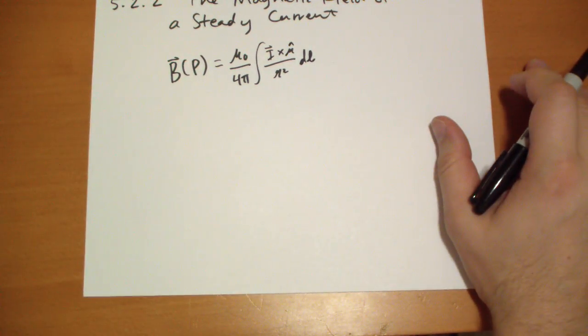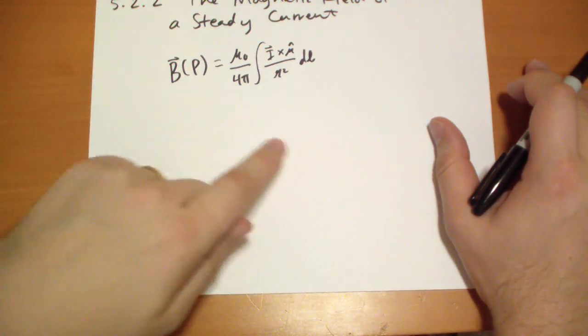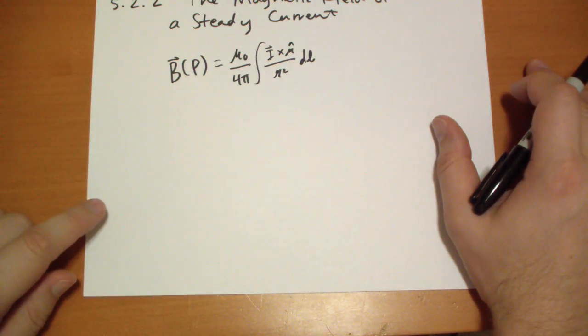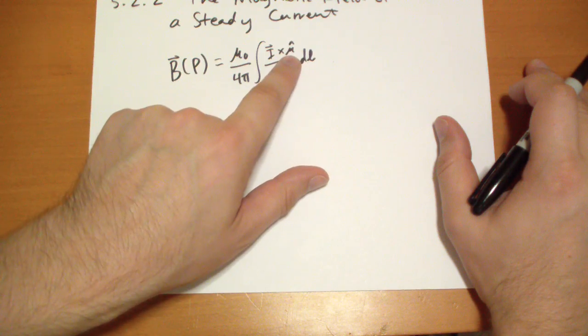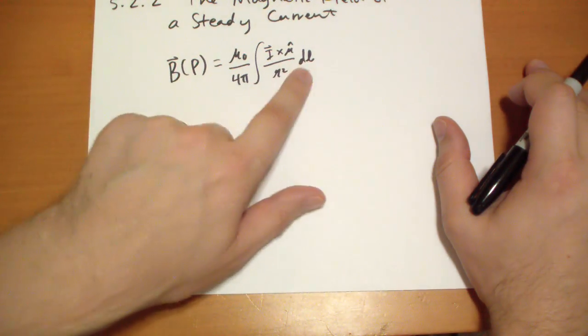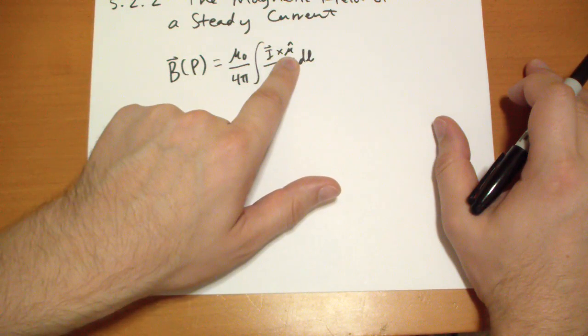So this equation says you go along some path where there's a current flowing. You go along some path and you have the current cross the difference between the point and the place we're integrating - that's the r-curly.